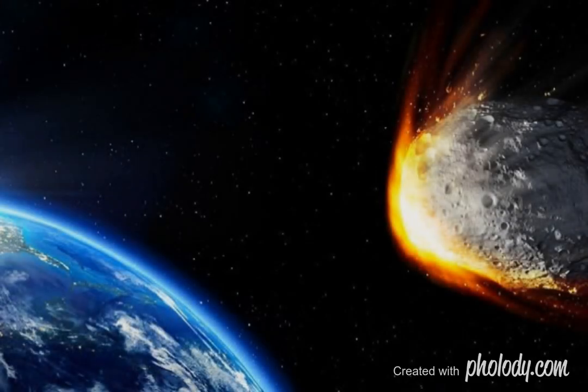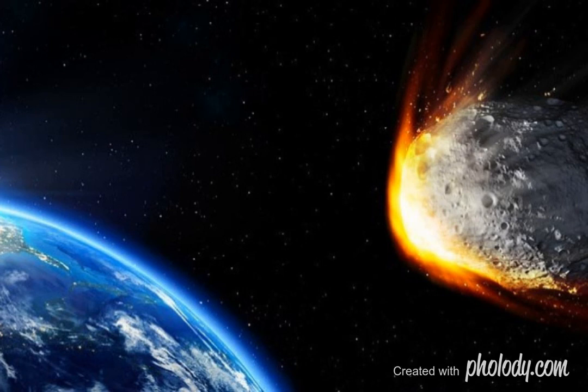On August 10, an asteroid could hit the Earth. The 2006 QQ23 asteroid was first observed on August 21, 2006. It is expected to move past Earth on August 10, 2019, at a distance of about 0.04977 astronomical units.